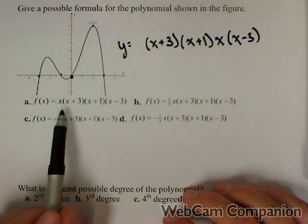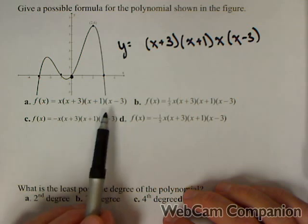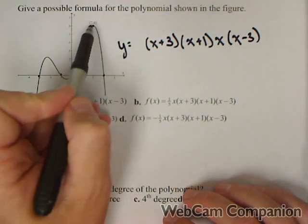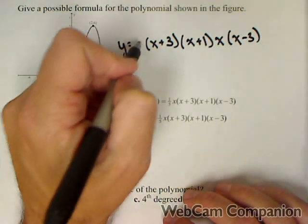Now, notice this looks very similar to answer a, but answer a is not quite correct. We were also given a point that has to go through the point two six.